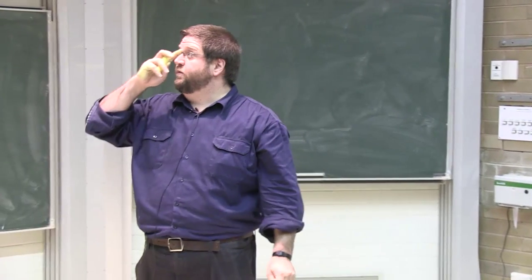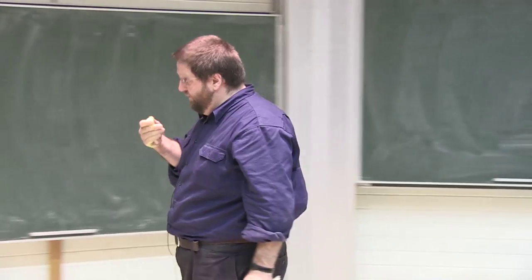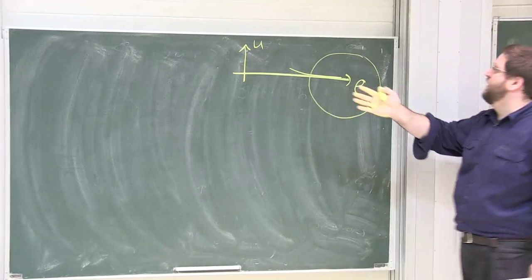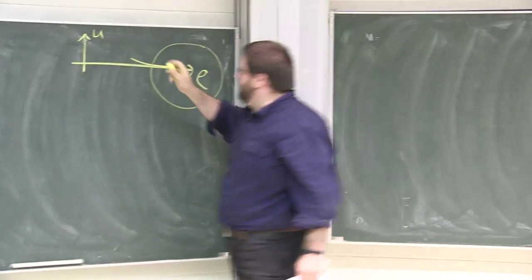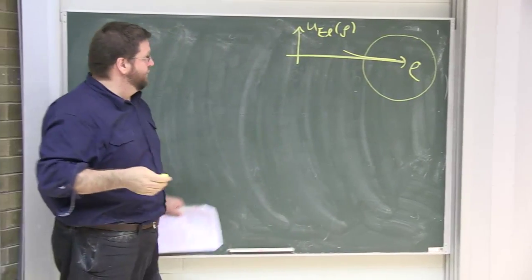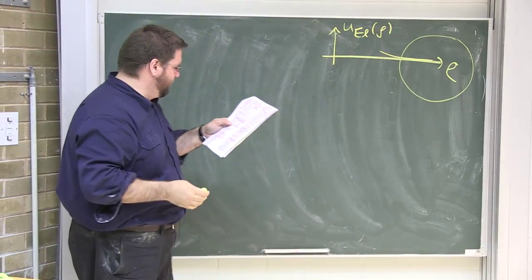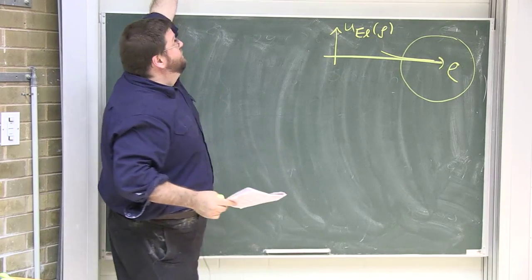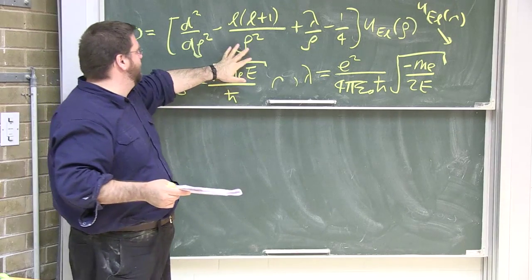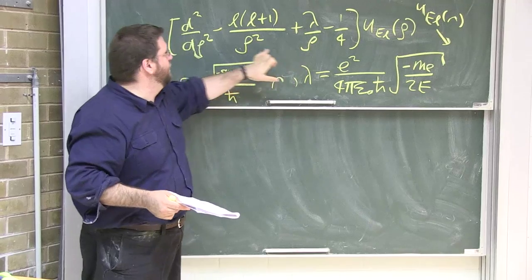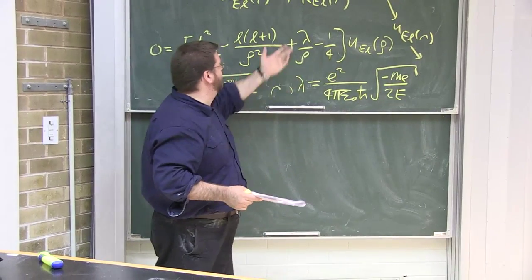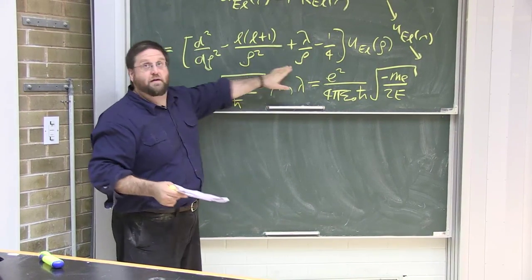We have to pull tricks similar to those used when studying the simple harmonic oscillator. We need to understand how the solution — the scaled radial wave function u as a function of ρ — decays to infinity. Let's ask how the equation behaves when ρ is large. The second and third terms become arbitrarily small, so only d²u/dρ² − (1/4)u = 0 survives as the asymptotic form.